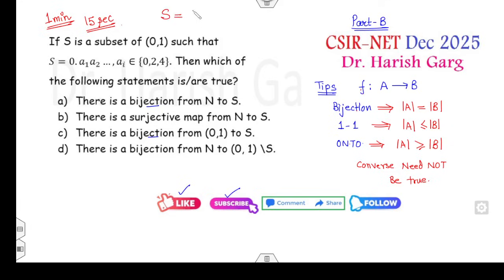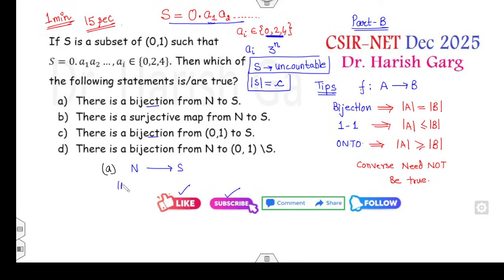Now you can see, let me clear this screen. You take your one minute. One minute is more than enough, you can solve within 15 seconds. Now you can see what is my S. S is 0.a1 a2 a3 and so on, where ai's are either 0, 2, and 4. Now how many choices for each ai? Three raised to power n, because these are three elements and there are n elements.